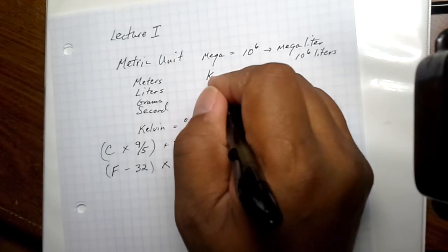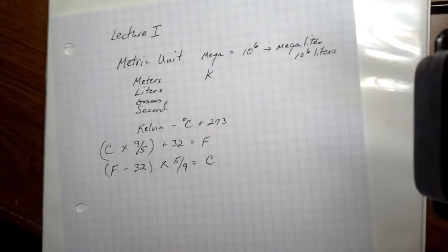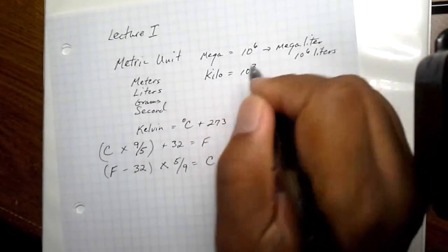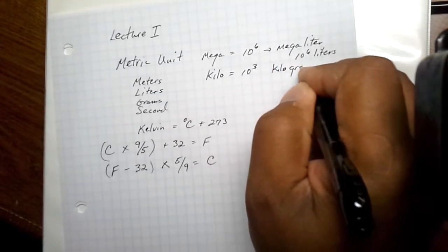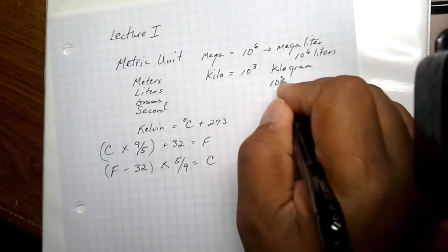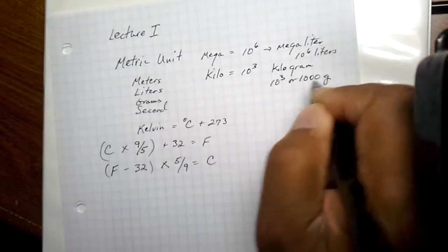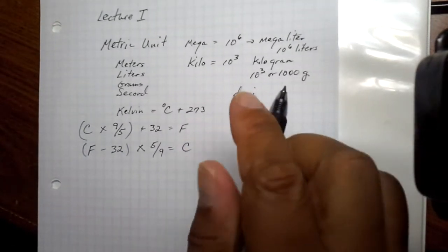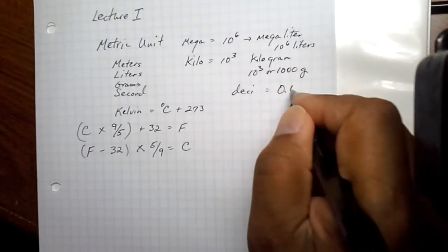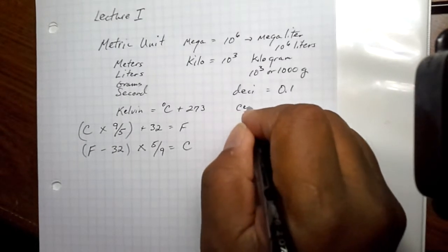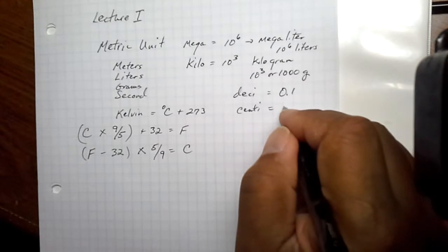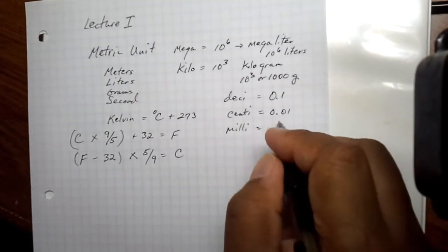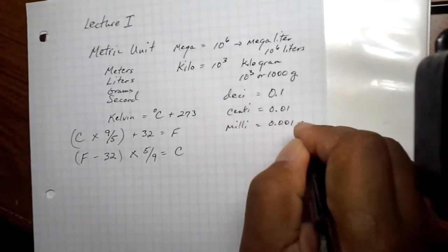More typically, we use kilo, which is 10 to the 3rd. So a kilogram is actually 10 to the 3rd or 1,000 grams. And the rest of the prefixes follow as indicated here. We have deci, which is equivalent to a 10th or 0.1. Centi, which is equivalent to 1 over 100 or 0.01. We have milli, equivalent to 0.001 or 10 to the minus 3.